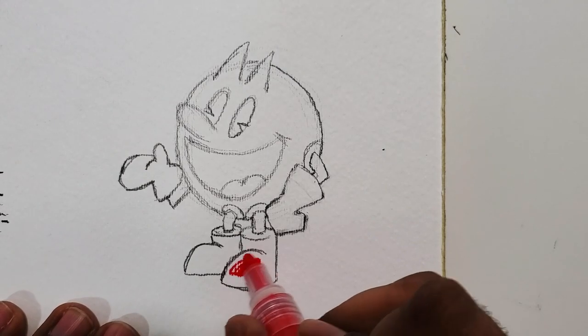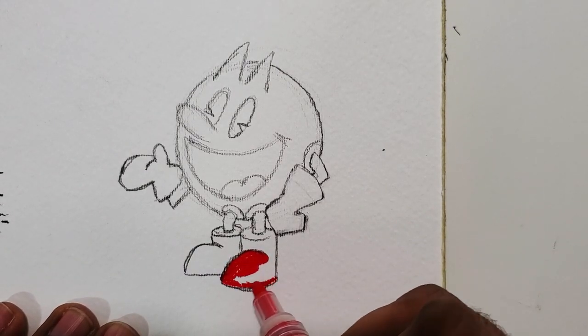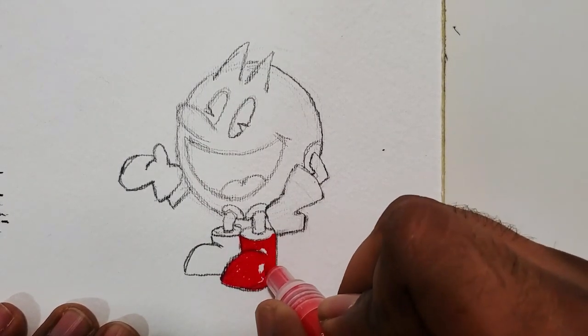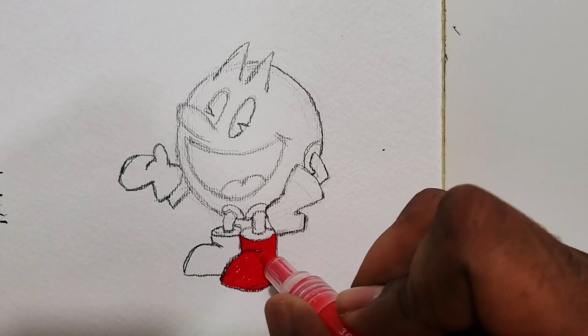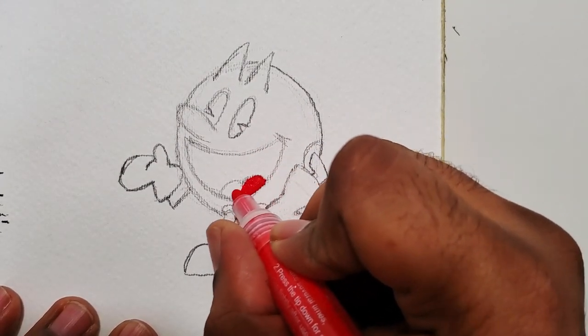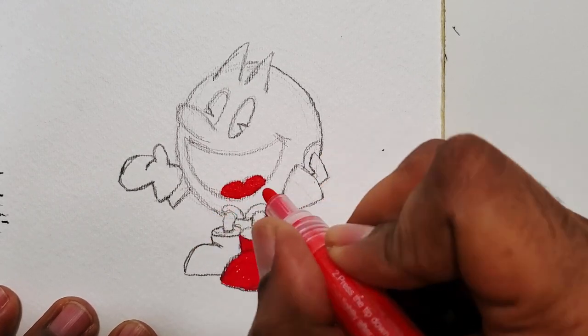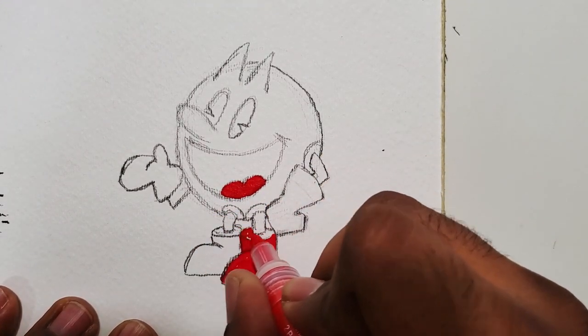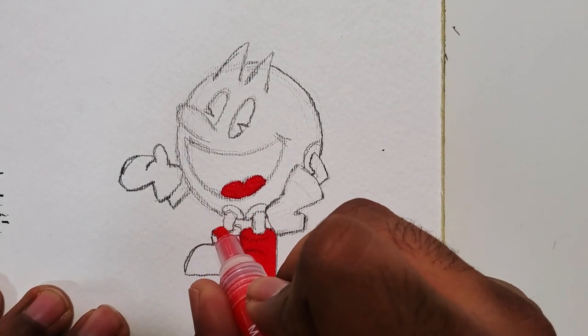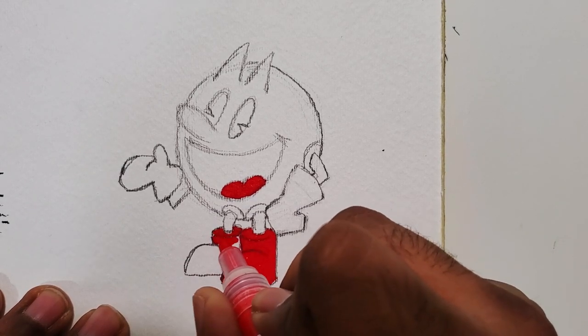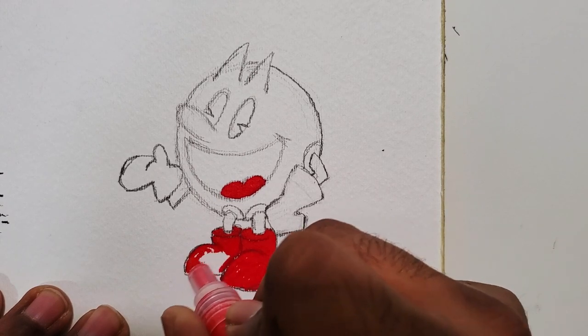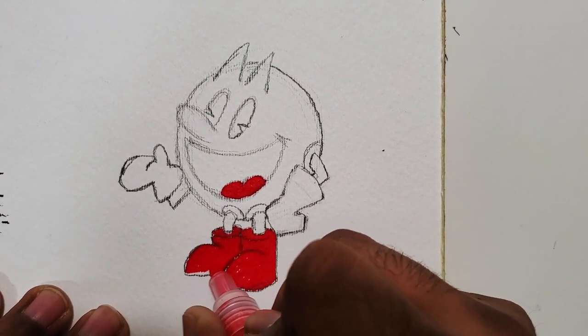I finished the feet and now I'm coloring those in with a red acrylic marker. I'm just using a solid red color and it's the same red I use for the tongue. Really this Pac-Man when you color them in has just I think four or five colors: red, yellow, black and white. I think it's just those four. Oh and orange I think for the gloves.